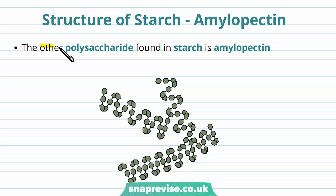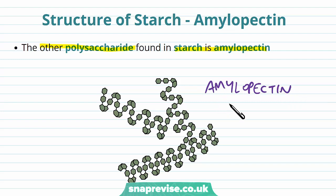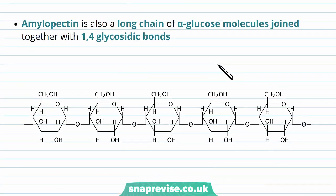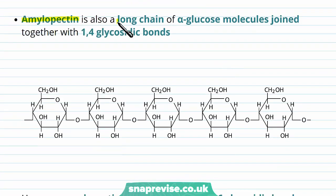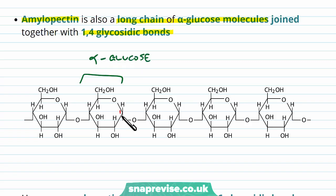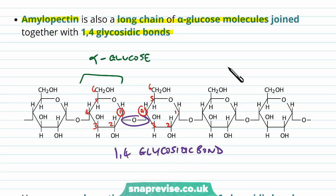The other polysaccharide found in starch is amylopectin. It's similar to amylose in that it's also a long chain of alpha glucose molecules joined with 1,4 glycosidic bonds, and it's stored with amylose in those amyloplasts of the plant cell. Numbering the carbons one to six, we can see that the glycosidic bond lies between carbons one and four — a 1,4 glycosidic bond, exactly what we had in amylose.